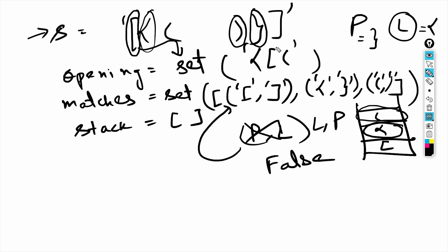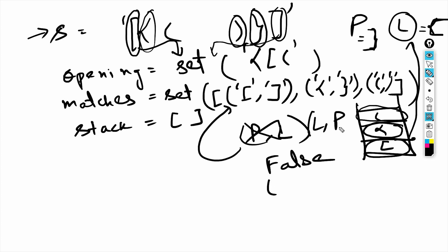Moving on to the next character — a right square bracket. It's not present in the opening set, so we pop an element from the stack and store it in l. Here p is the right square bracket and l is the left square bracket. We check if (l, p) is present in matches — yes it is, so we won't return false.